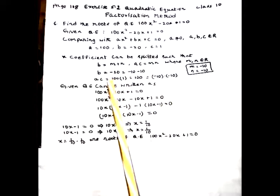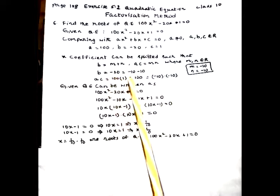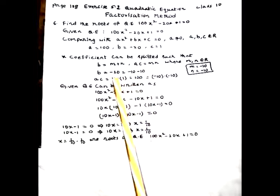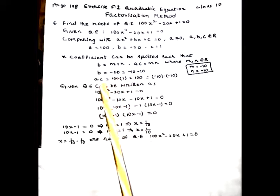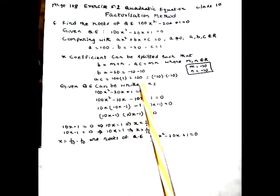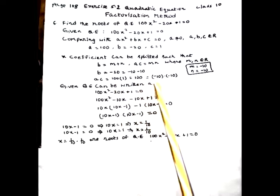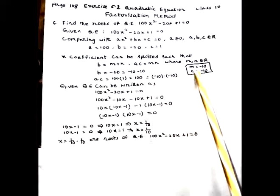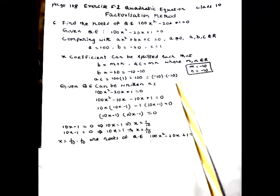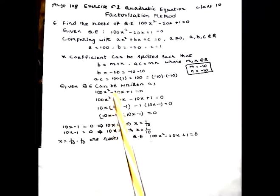Minus 20 can be written as the sum of -10 and -10, since -10 + (-10) = -20. The product ac = 100 × 1 = 100, which can be written as mn = (-10) × (-10) = 100. So m = -10 and n = -10. Therefore the given quadratic equation can be written in split form.